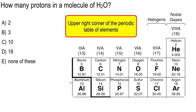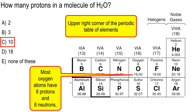The correct answer is C. The protons in H2O: there are two hydrogens, one proton each — so that's two. In oxygen, most oxygen has eight protons and eight neutrons. The atomic number is eight — that always tells you the number of protons in the nucleus. The top number tells you the total number of things in the nucleus — protons plus neutrons. For oxygen, that's pretty close to exactly 16, called the atomic weight.